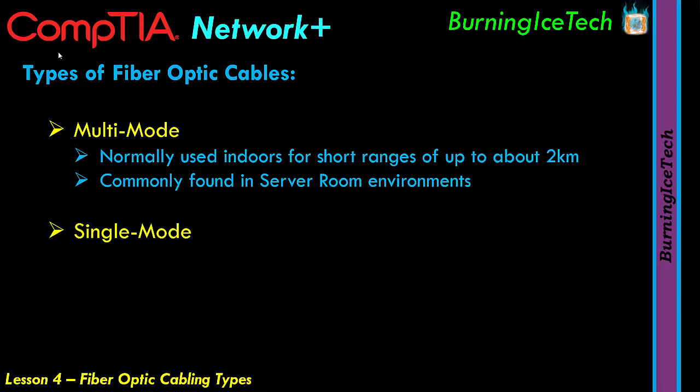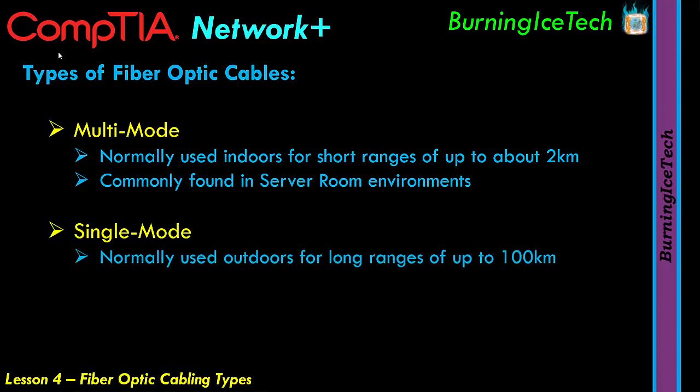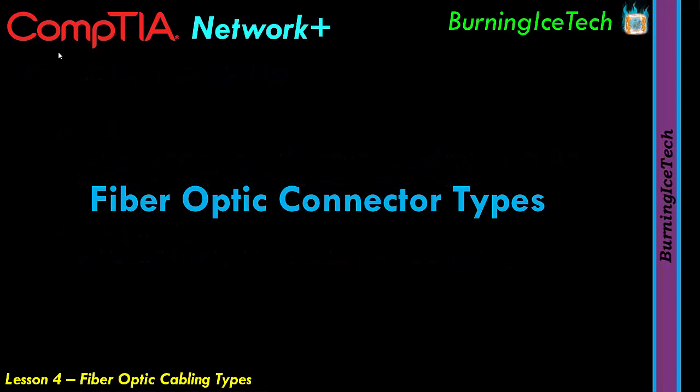The single-mode optic fiber is usually used outdoors and can go for much longer distances — up to 100 kilometers. This is what we normally use to link things up over very long distances and at great speeds. Now, unlike ethernet cables which all generally use the same connector type, fiber optic cables don't all use the same connector types. So let's have a quick peek at the various kinds of fiber optic cable connector types.